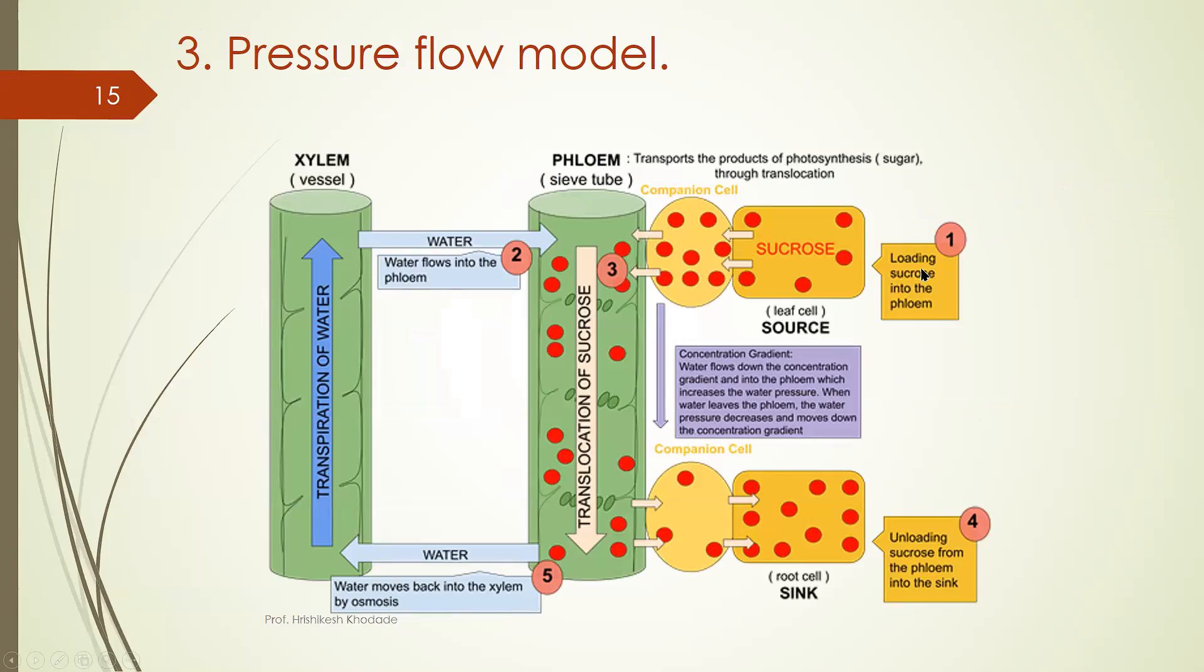So what is pressure flow model? You have to notice that what happens first step is the cells in a leaf which is considered as source. It is providing or transporting food material through the companion cell. What is this sieve tube element? So you can notice that food material are transported from here to here.